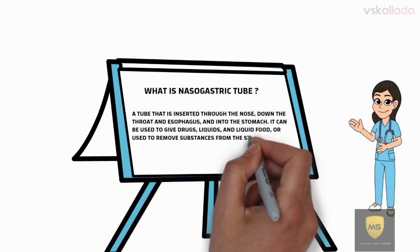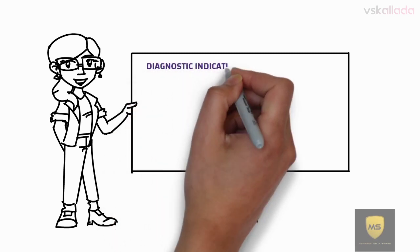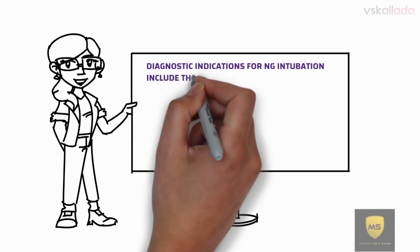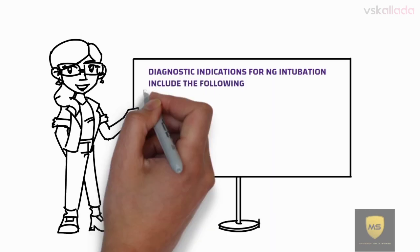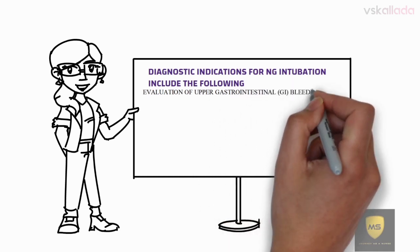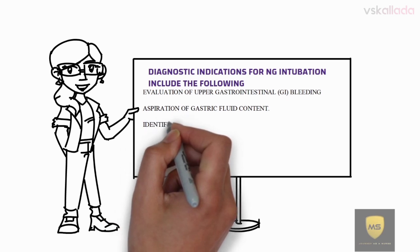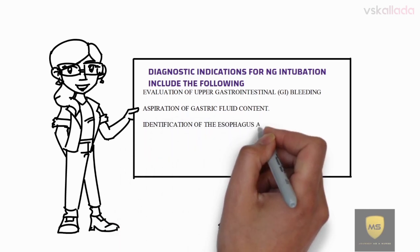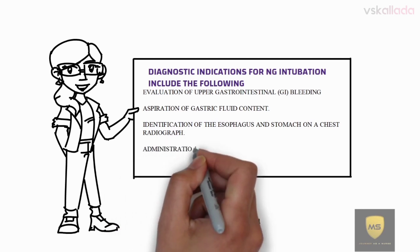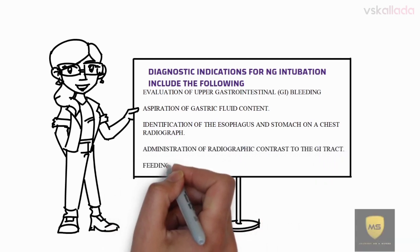Diagnostic indications for NG tube insertion include: evaluation of upper gastrointestinal bleeding, aspiration of gastric fluid content, identification of the esophagus and stomach on a chest radiograph, and administration of radiographic contrast to the GI tract for feeding and medication purposes.